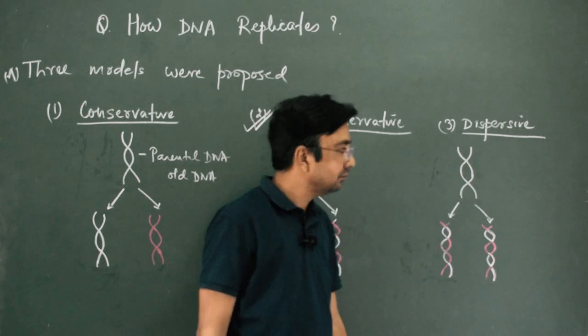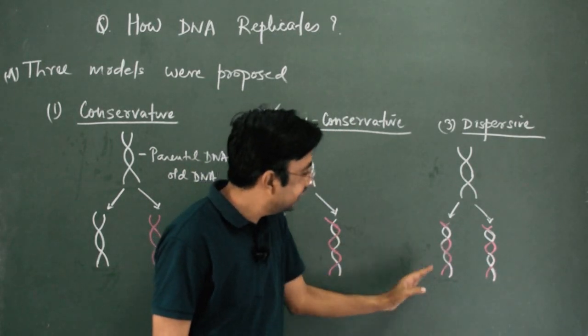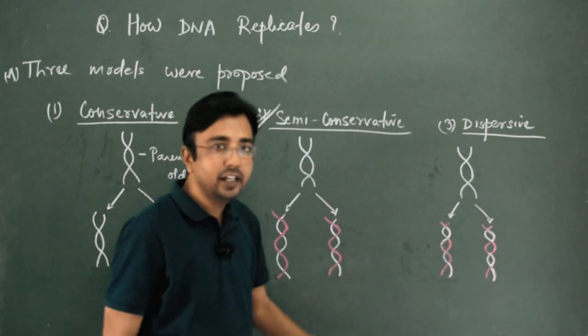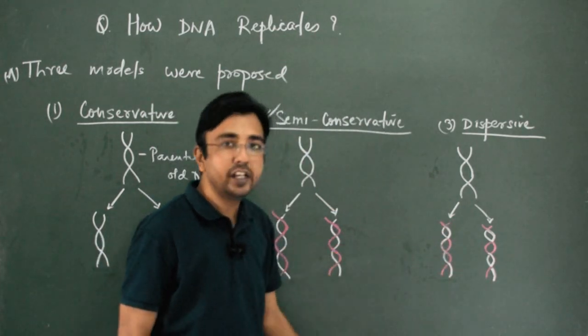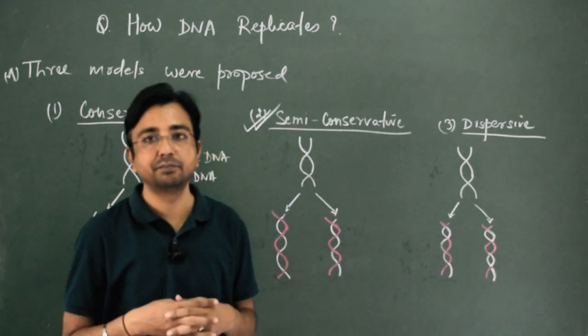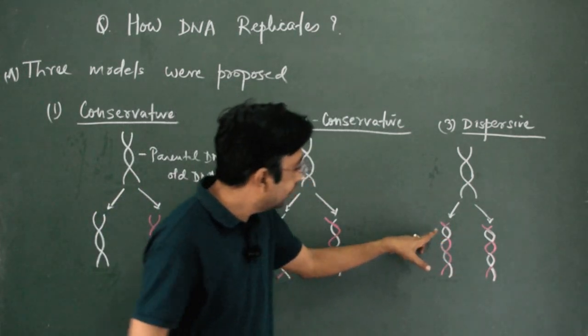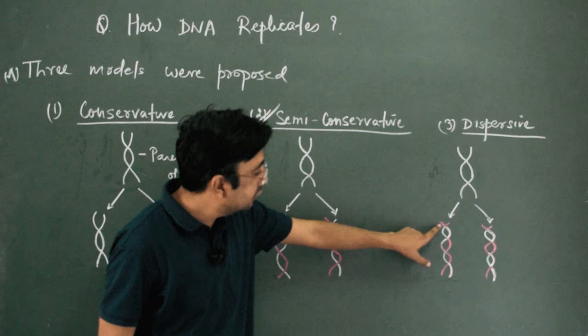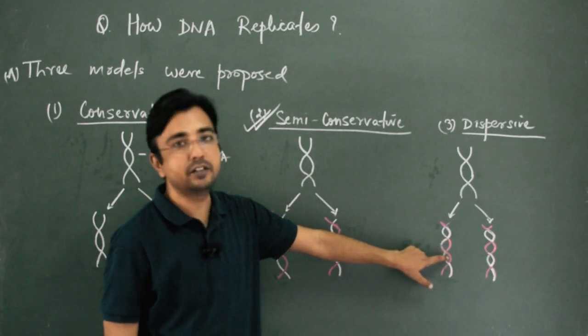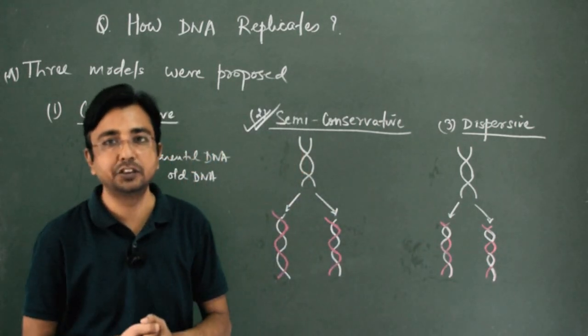In case of dispersive model, this is the parental DNA. And in the next generation, we can see that neither the parental DNA is complete nor the new DNA is complete. They are mixed together because you can see here that this part is red, then this part is white, then this part is white, then this part is red. This is dispersive model. The strands are dispersed.